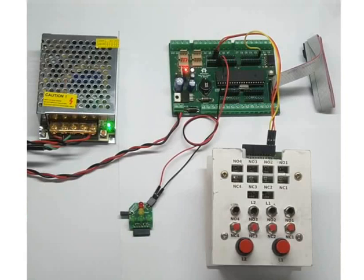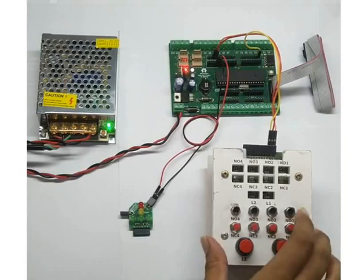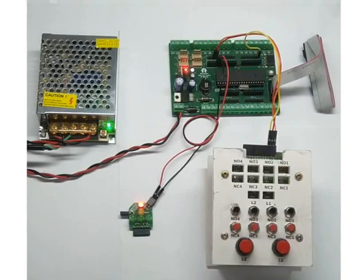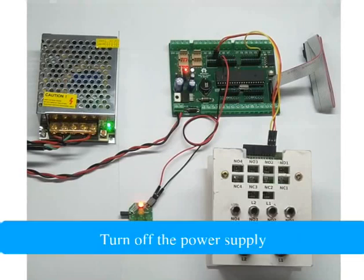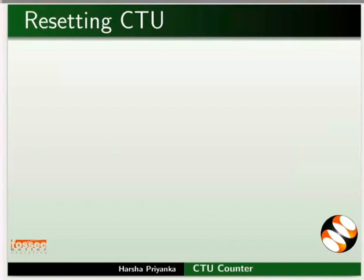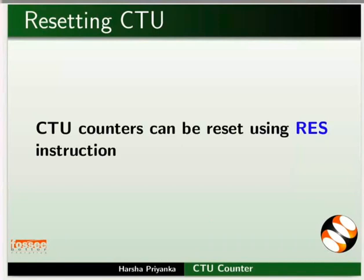After making all the connections properly, turn on the power supply. Initially the red LED will not glow. It will glow only when switch NO1 is pressed at least 3 times. Press switch NO1 three times. We can see the LED will be glowing even after NO1 is released. Turn off the power supply. In order to turn off the LED, we need to reset the counter. This can be done by using a reset instruction as learnt in the RTO tutorial.